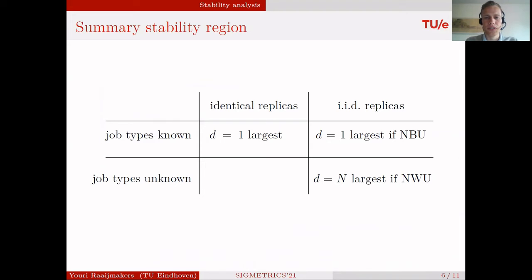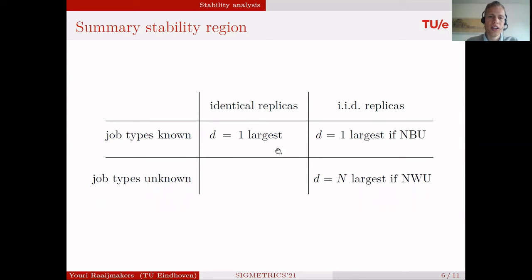Now we come to the actual results. In the scenario of known job types and IID replicas, no replication gives the largest stability region when the job size distribution is new-better-than-used (NBU). But if the job types are unknown, then full replication gives the largest stability region when job sizes are new-worse-than-used (NWU).